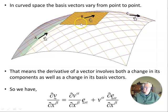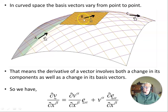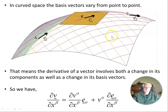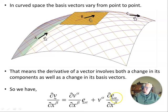On a manifold, we can't simply add or subtract vectors — there is no such sensible operation. If we wish to compare vectors, we need to take a vector at one point, say point C, and parallel transport it back to point B along some curve before we can compare them. This means the derivative of a vector involves both a change in its components as well as a change in its basis vectors. So the partial derivative of a vector V is: the partial derivative of the components times the basis vector, plus the components times the partial derivative of the basis vectors themselves.